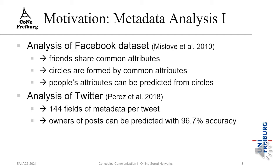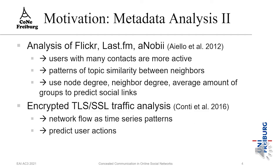Paris et al. performed an analysis of Twitter tweets in 2018, finding that each tweet has around 144 fields of metadata, and they were able to predict which users posted which tweet with an accuracy of over 96%. Aiello et al. analyzed datasets from Flickr, Last.fm, and Anubi, finding that users with many contacts are more active, and there are patterns of topic similarity between neighbors.